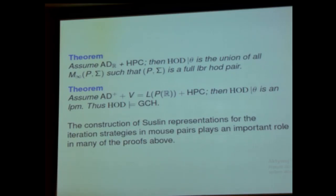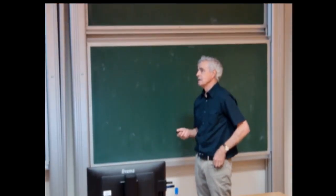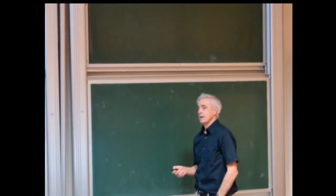The construction of Suslin representations for iteration strategies plays an important role in many of the proofs. That was the other half of our title. Why is it that the strategy of a mouse pair is Suslin co-Suslin? And the other half is that every time we get a new Suslin set, we get a new iteration strategy. Let's say why the strategies are Suslin themselves.